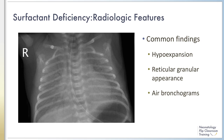In more severe cases, there is complete white-out of the lungs. Clinically, these findings lead to impairment of the infant's ability to oxygenate and ventilate due to poor compliance, decreased functional residual capacity, and atelectasis. Infants are tachypneic and demonstrate other signs of respiratory distress such as nasal flaring, retractions, and grunting. Surfactant deficiency is diagnosed clinically based on the combination of work of breathing, oxygen and ventilation requirements, chest X-ray findings, and associated risk factors.